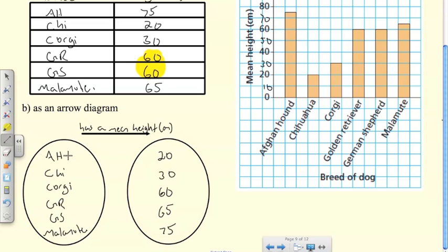Now it's just a matter of drawing in my arrows. The Afghan hound is 75 centimeters, Chihuahua is 20, Corgi is 30, the Golden Retriever and German Shepherd are both 60, and the Malamute is 65.